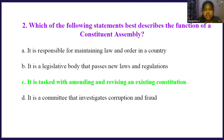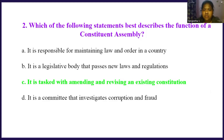Which of the following statements best describes the function of a constituent assembly? Option A, it is responsible for maintaining law and order in a country. Option B, it is a legislative body that passes new laws and regulations. Option C, it is tasked with amending and revising an existing constitution. Option D, it is a committee that investigates corruption and fraud. The right answer is option C, it is tasked with amending and revising an existing constitution.